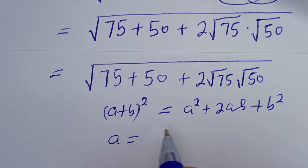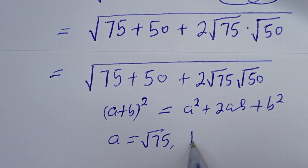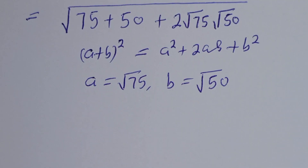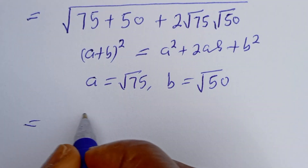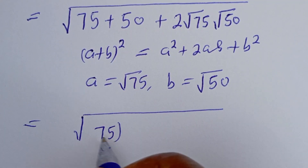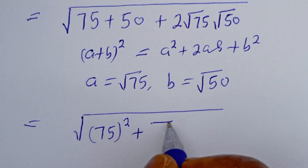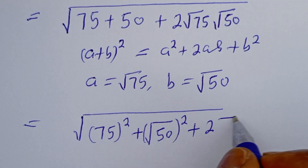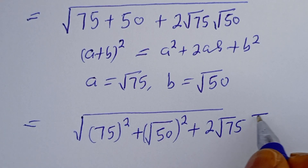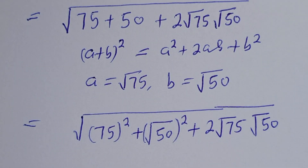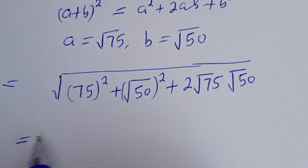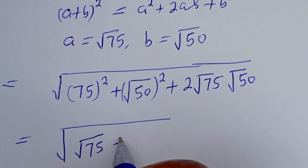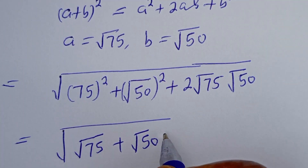a is equal to square root of 75, b is equal to square root of 50. Then this becomes square root of 75 squared plus square root of 50 squared plus 2 root 75 times root 50, which is all equal to square root of 75 plus root 50, all squared.